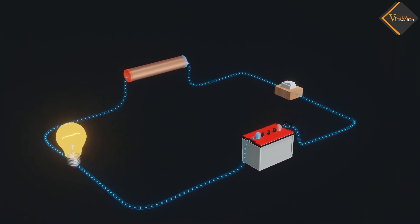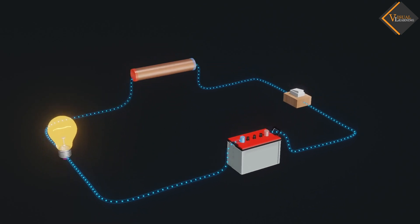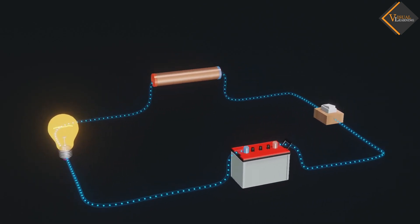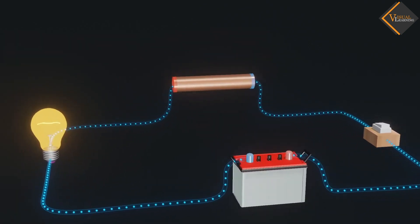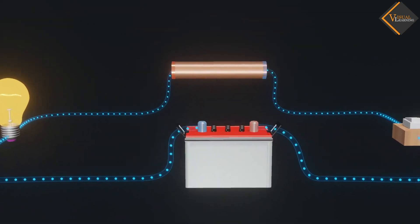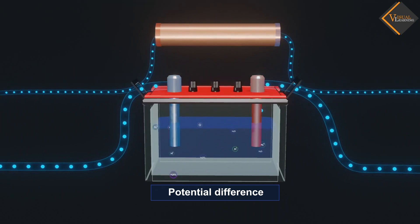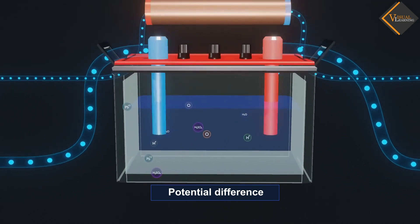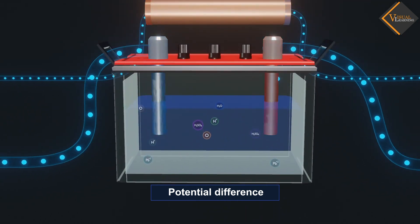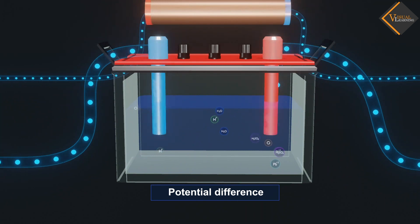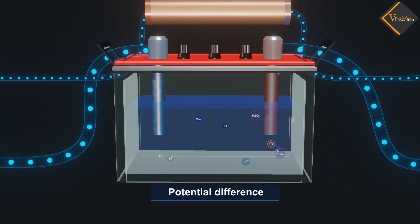We know that a battery or a cell is a source of electrical energy. The chemical reaction within the cell generates the potential difference between its two terminals. This potential difference sets the electrons in motion to flow the current through a resistor connected to the battery.